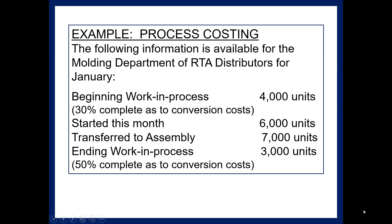In this example, we'll take a look at a process costing environment. The following information is available for the Molding Department of RTA Distributors for January. Beginning work in process: 4,000 units, 30% complete as to conversion costs. Started this month: 6,000 units.